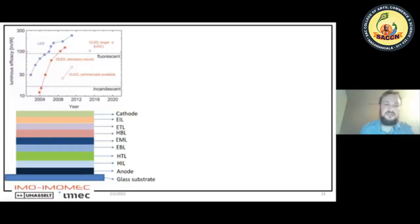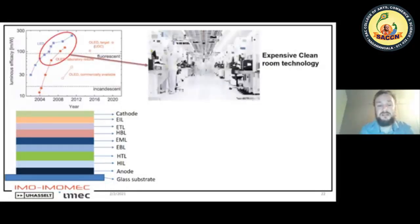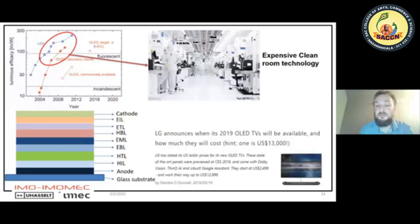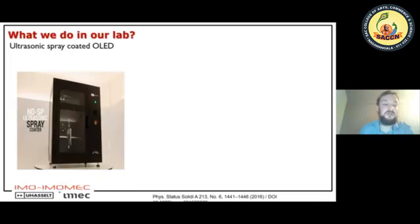Putting all of those several layers on top of each other requires clean room technology — very expensive. Especially when using polymers, it would be interesting to move away from clean room technology and use what they call solution processing. That's exactly what we are doing in the lab. One system we use is an ultrasonic spray coater.